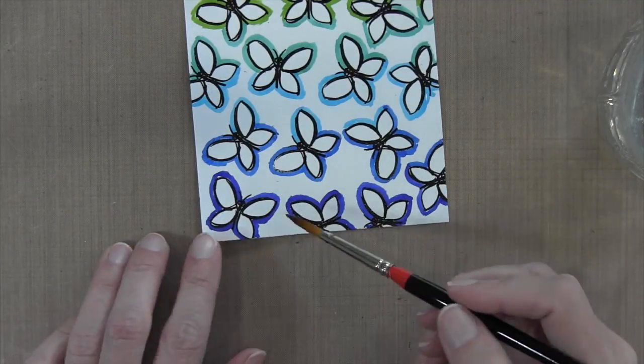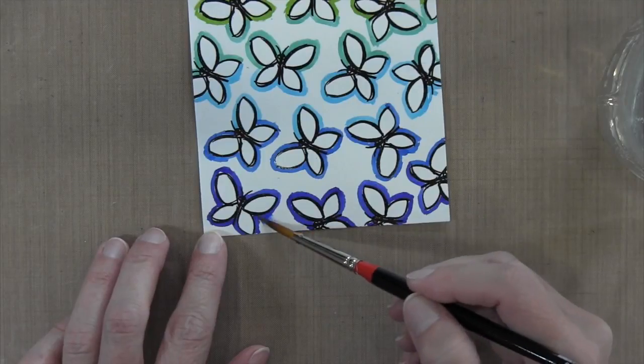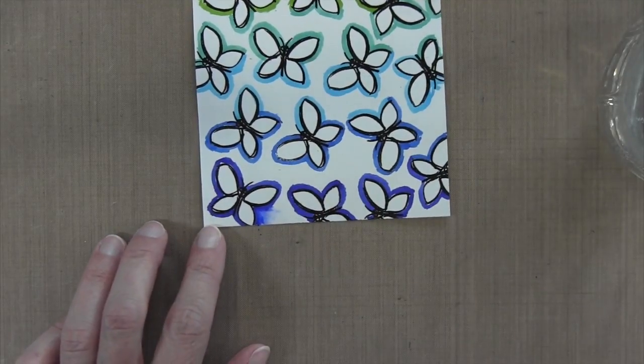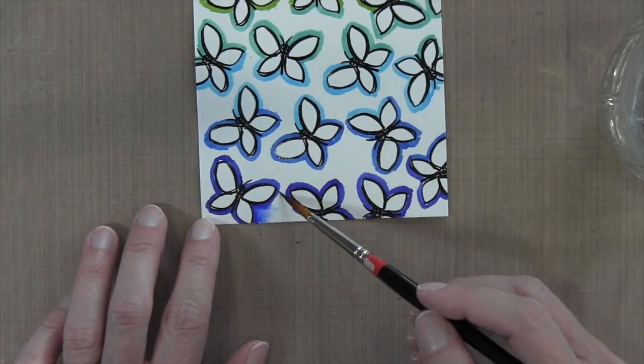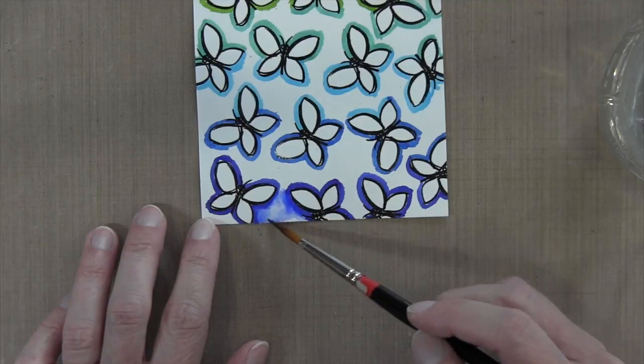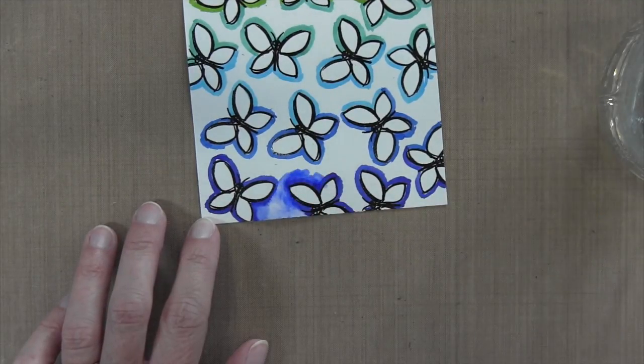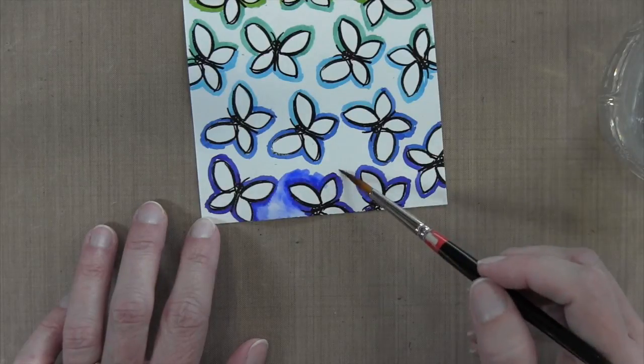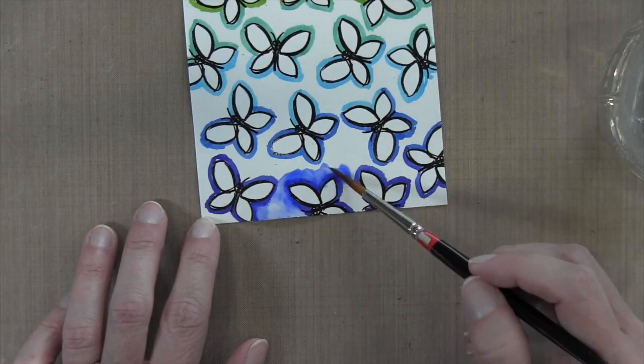Essentially I'm just adding water around the butterflies. I'm just going to tap it in there. I've already dipped my brush in the water, and I'm not doing very much brushing. I'm really just tapping the water in, and I'm going all the way to the edge of the color like where it hits the butterfly.